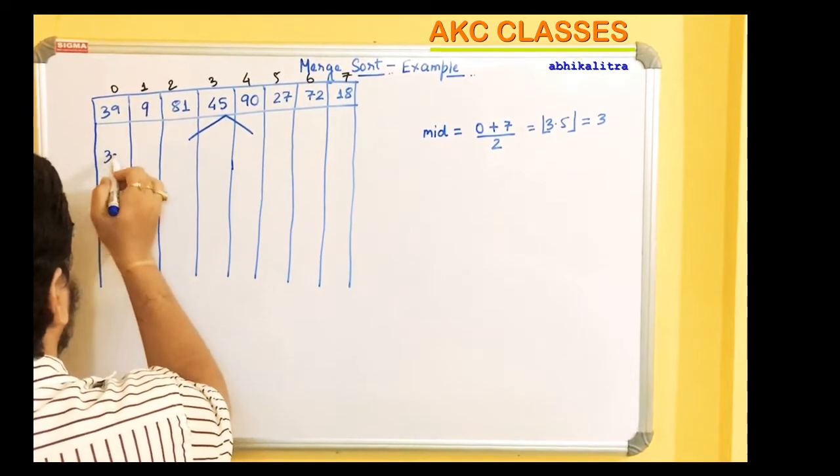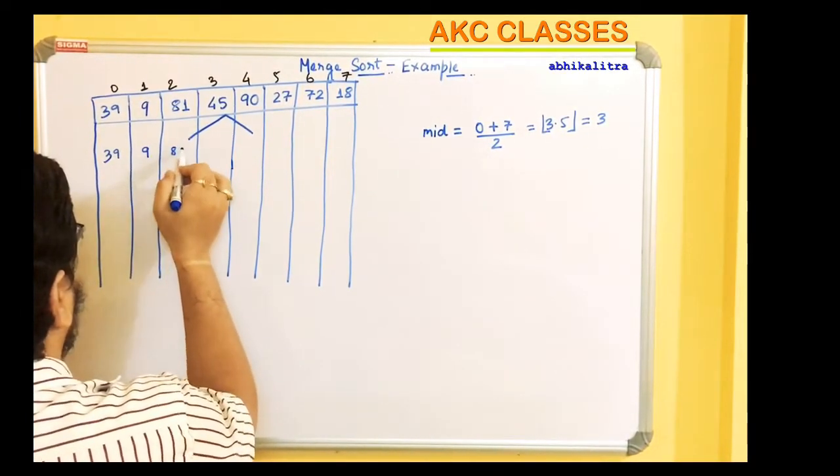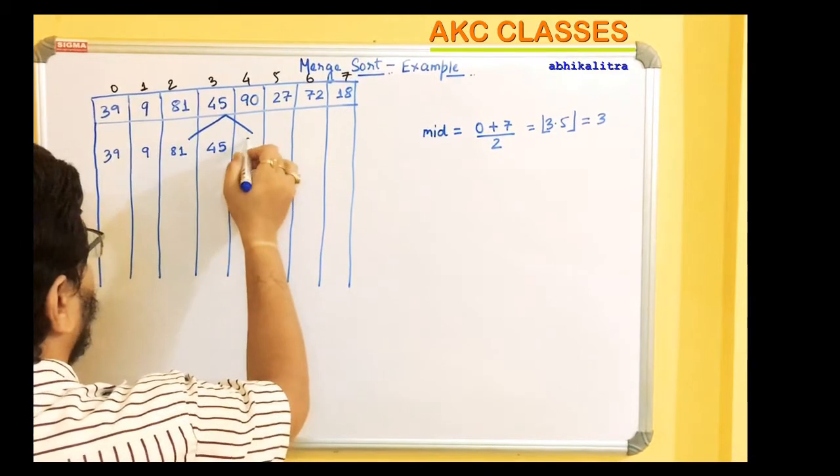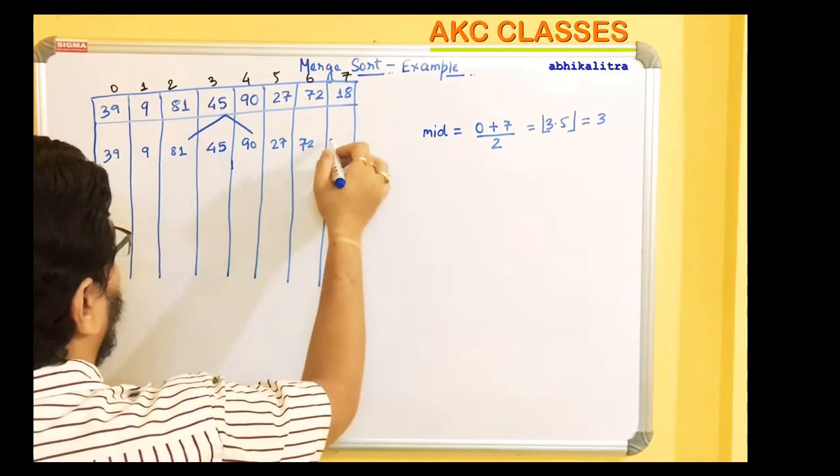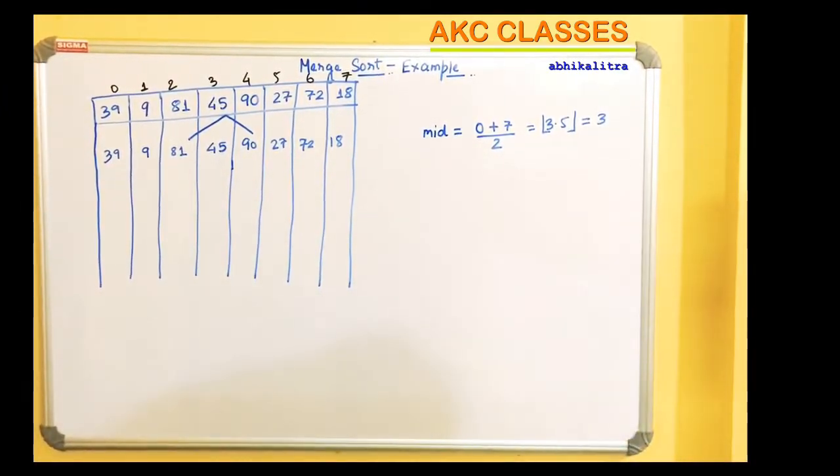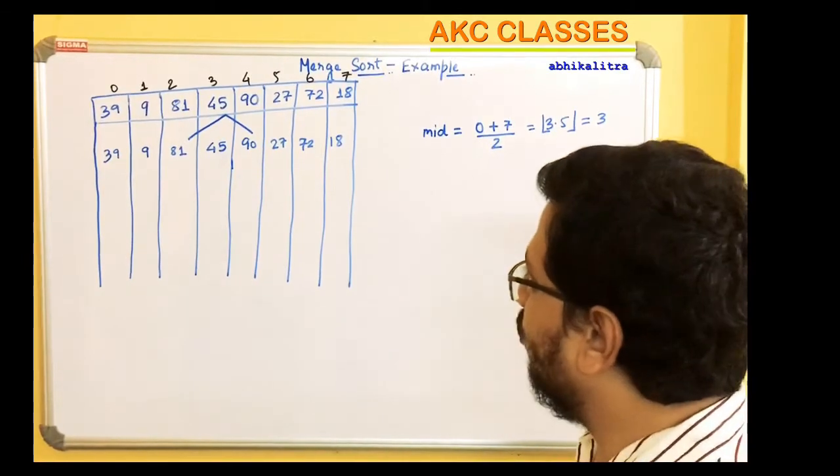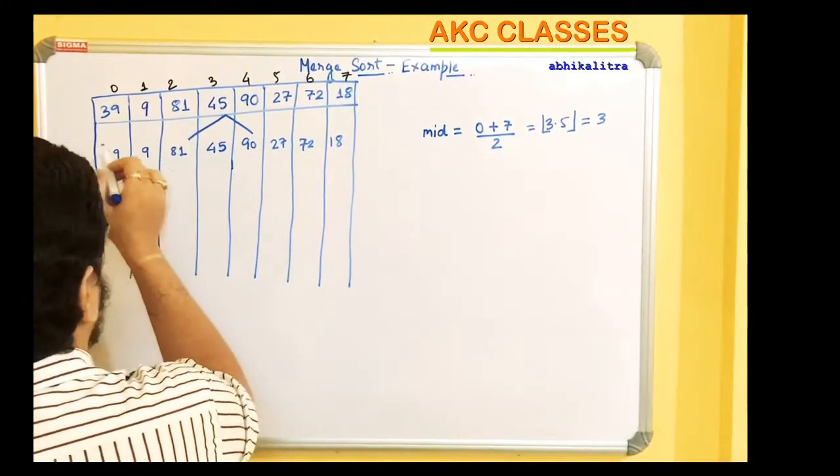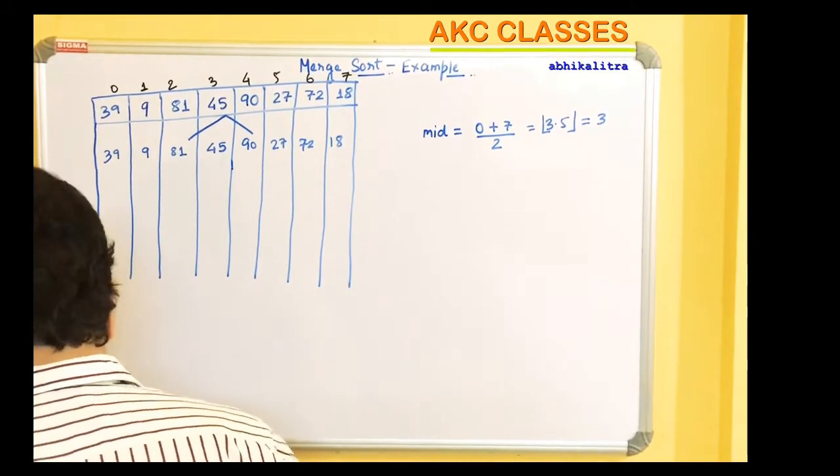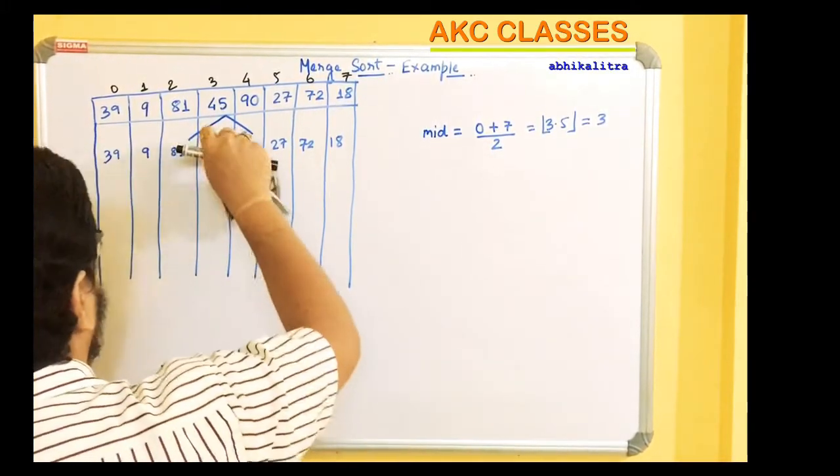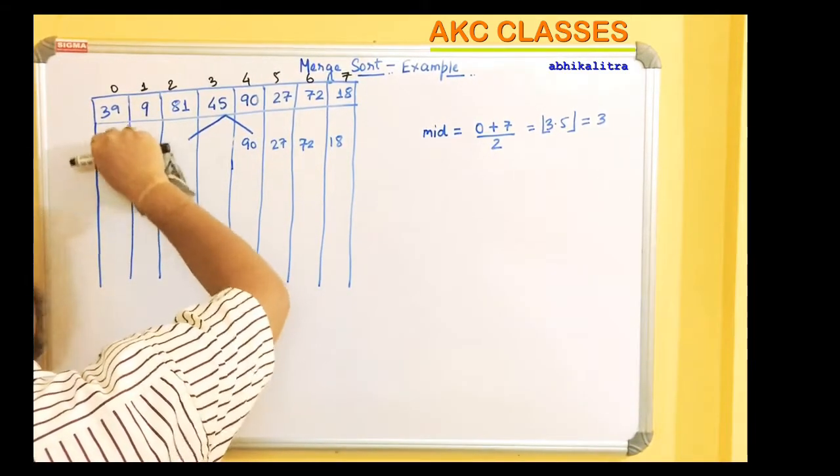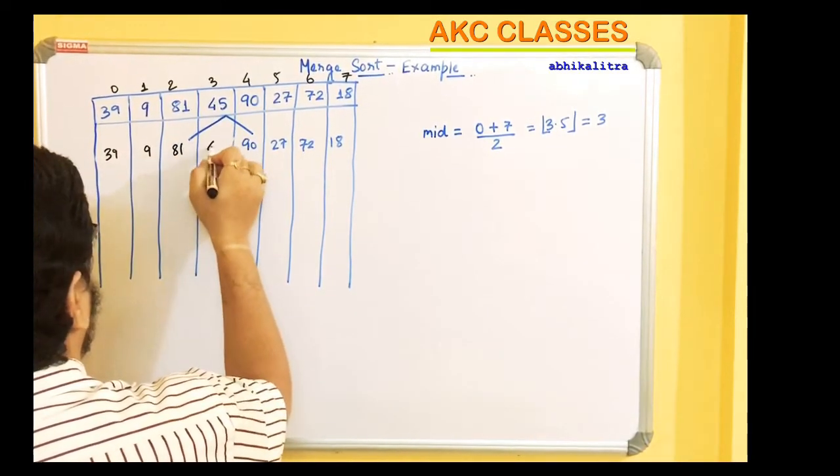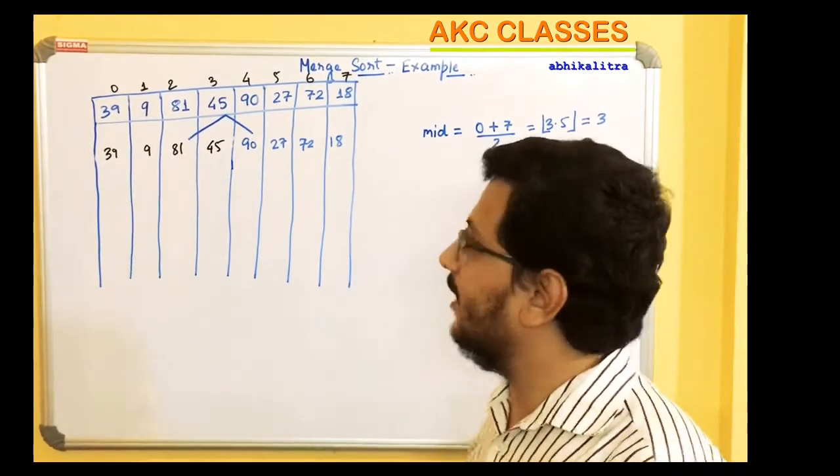So next, we have 39, 9, 81, and 45 on the left. Now we have 90, 27, 72, and 18 on the right. The left element is from index 0 to 3, and if we take the middle, this is index 1.